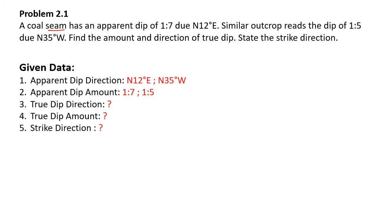Let's see the given data. They have given us 2 apparent dips — 2 apparent dip directions and 2 apparent dip amounts — and we have to find out the true dip direction, true dip amount, as well as the strike direction.